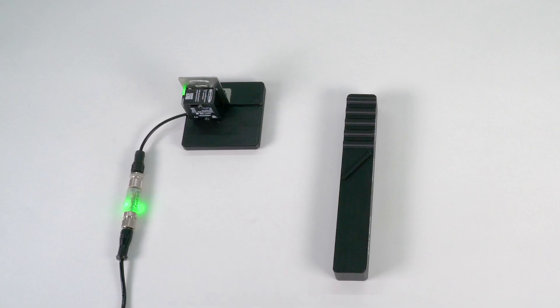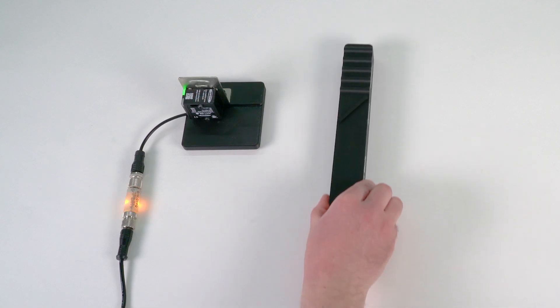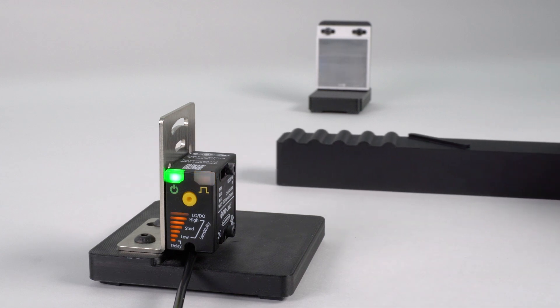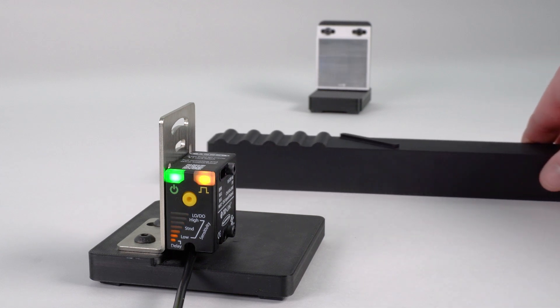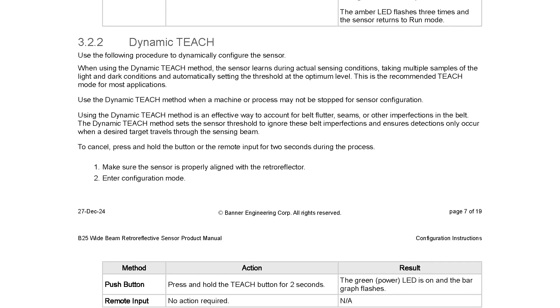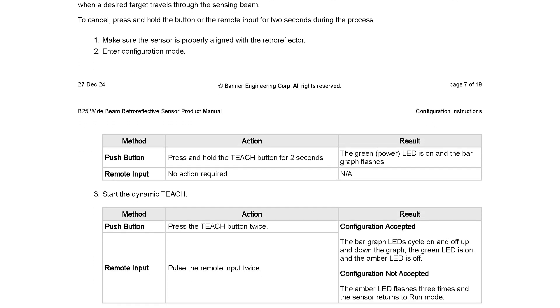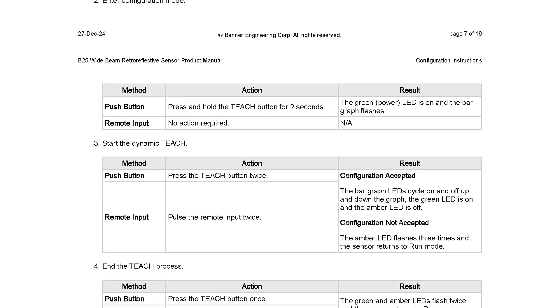If your application has an inconsistent beam obstruction when no target is present, such as flutter from a moving conveyor belt, a static teach may cause the output to chatter as the obstruction moves. To counter this, you can perform a dynamic teach which takes multiple samples of light and dark conditions and automatically sets the threshold at the optimum level.